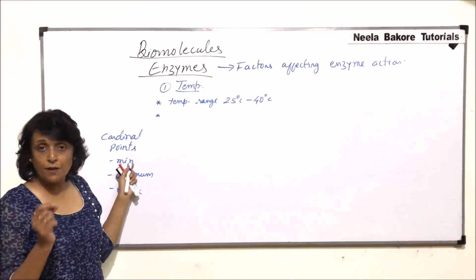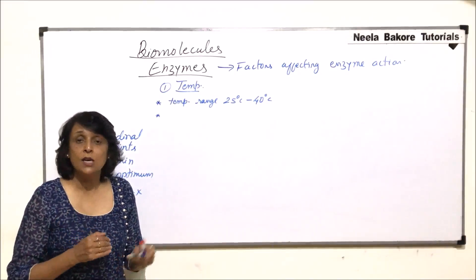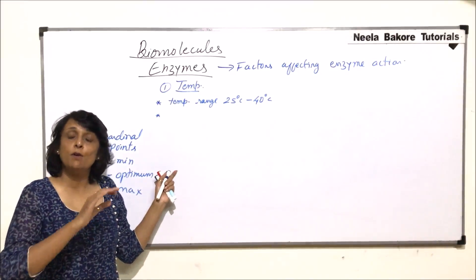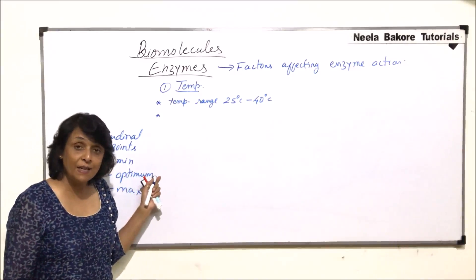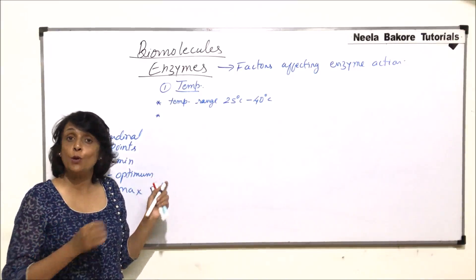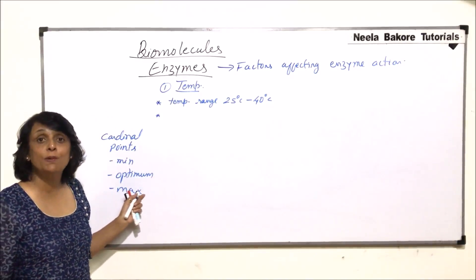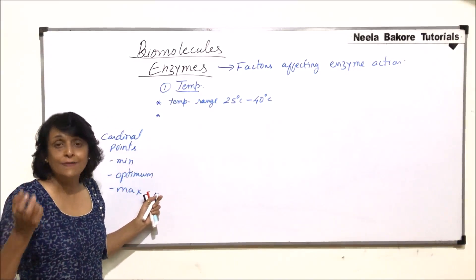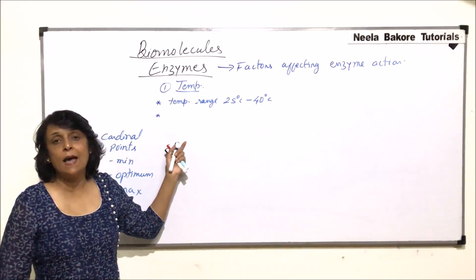We will understand these three points taking this factor. Minimum temperature would be that temperature below which the enzymatic activity will totally stop. Optimum temperature would be that temperature where the enzymatic activity would be maximum. And maximum temperature would be that beyond which the enzymatic activity will again stop.